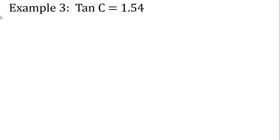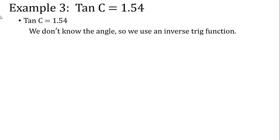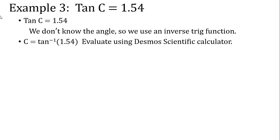Let's try tangent next — we haven't seen a tangent inverse example yet. This is example number three: tangent of C equals 1.54. We don't know the angle, so we're looking for angle C. We use the tangent inverse function and rewrite the equation: C equals tangent inverse of 1.54. Let's go ahead and use our scientific calculator.